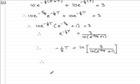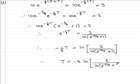Now all I need to do to get t is to multiply both sides by negative 8. And that will give me t equals negative 8 times the natural log then of all of this answer in the square brackets. So, that would be 3 all over 10 multiplied by e to the minus 5 eighths plus 1.